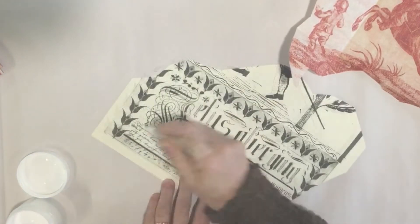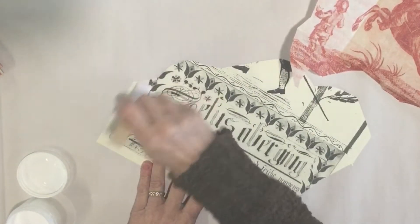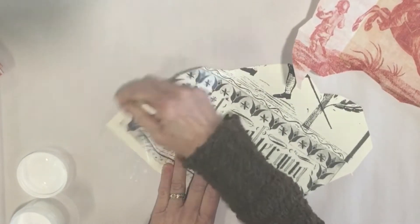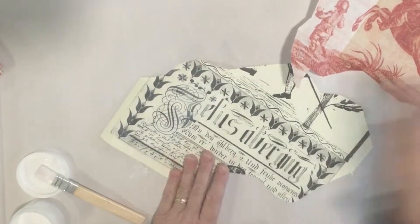If you're going to be decoupaging the front of this, just start at one edge. Mod Podge does dry fairly quickly so you kind of need to work quickly with this.